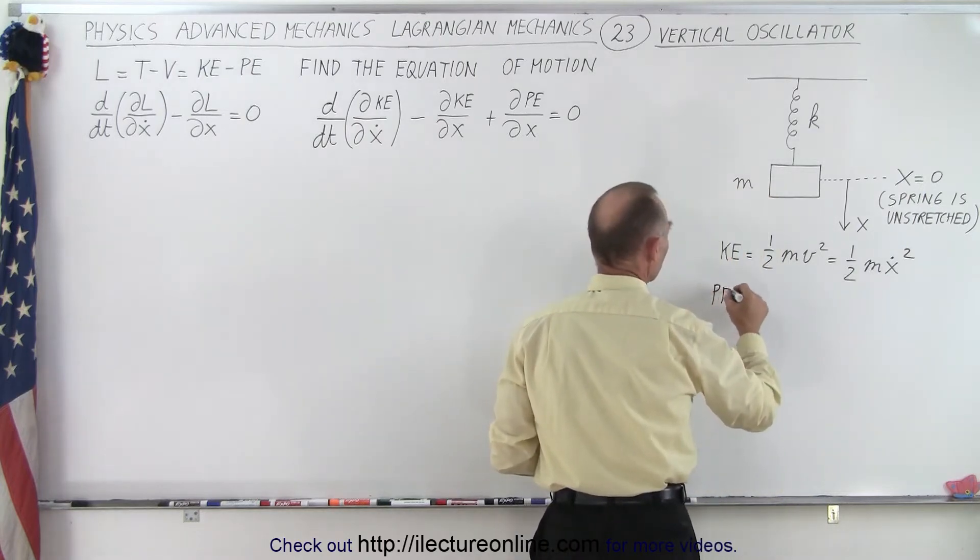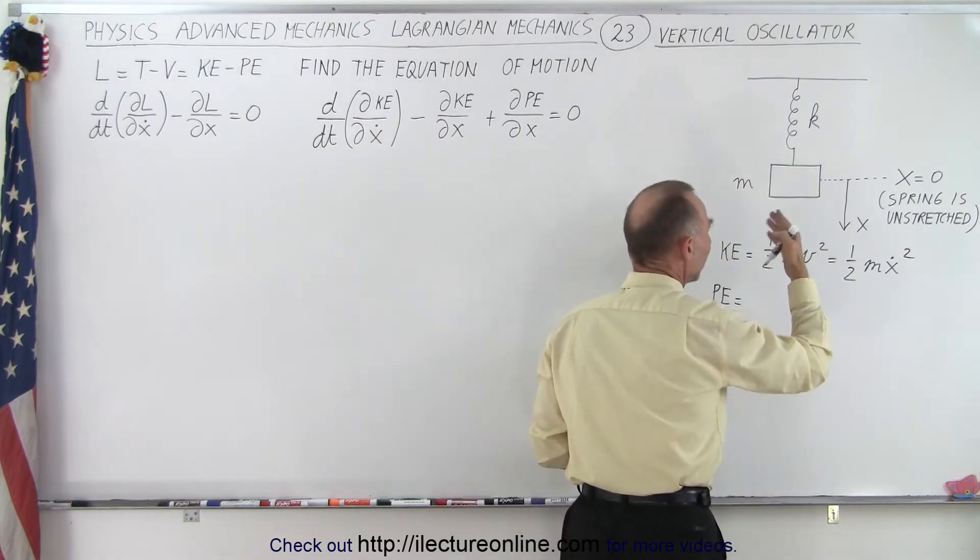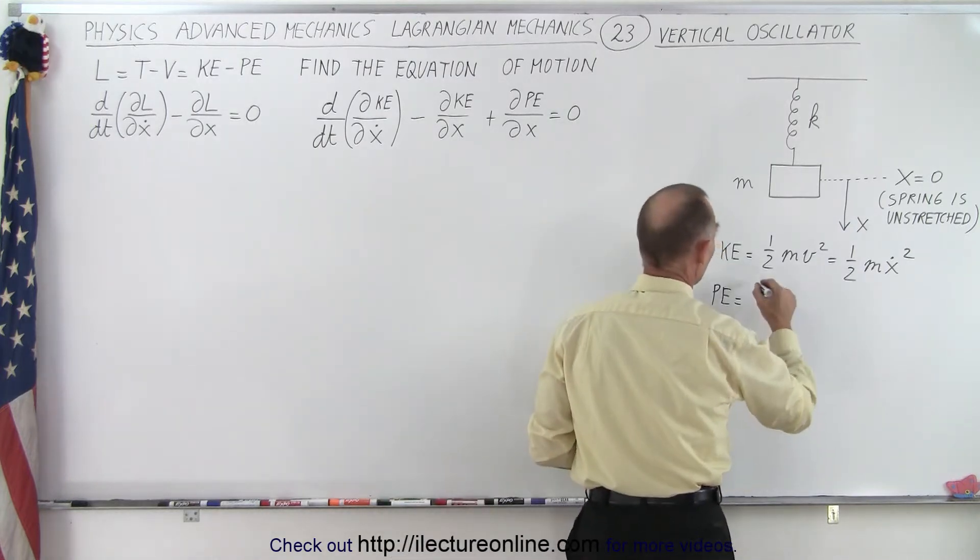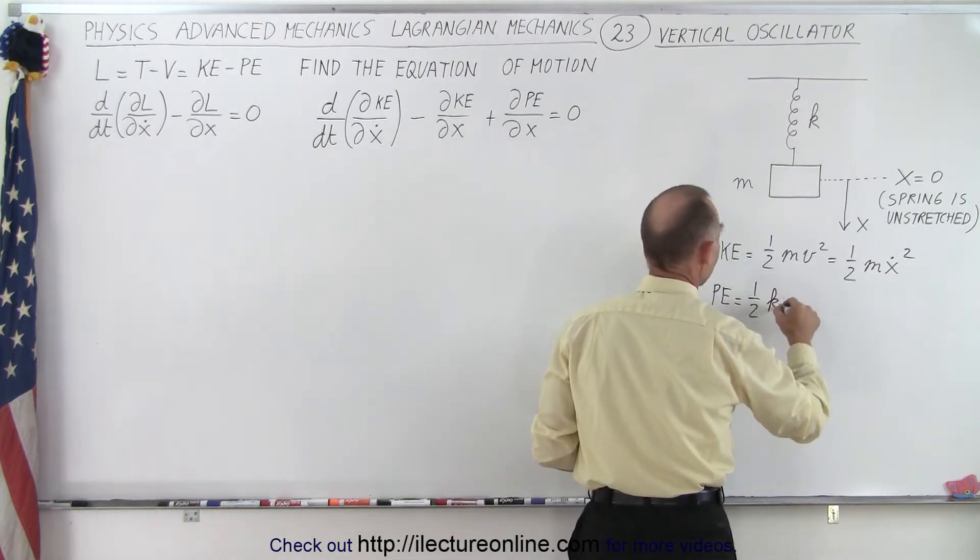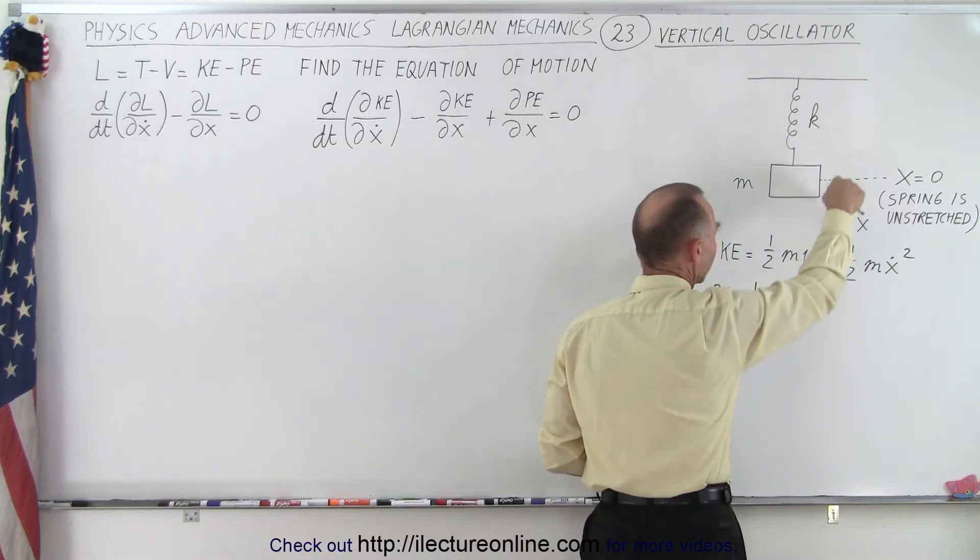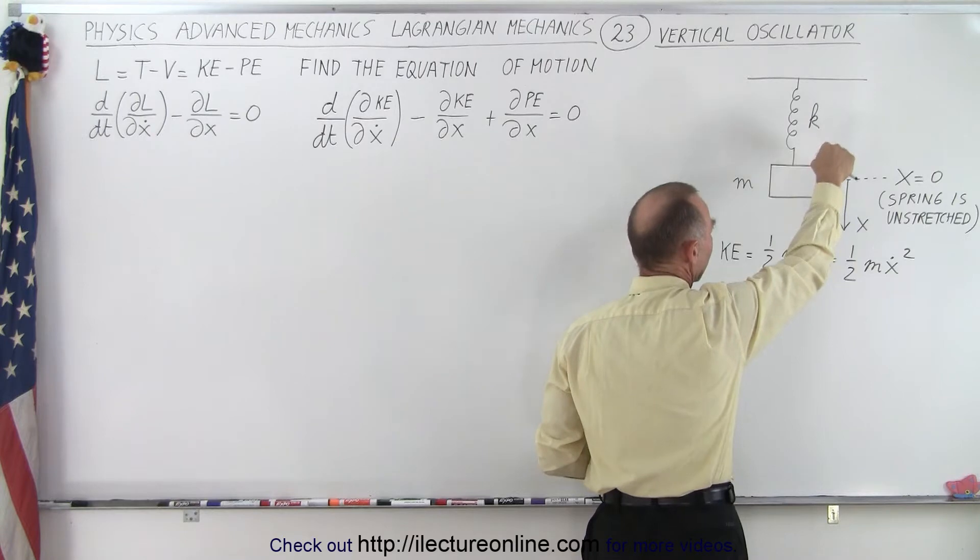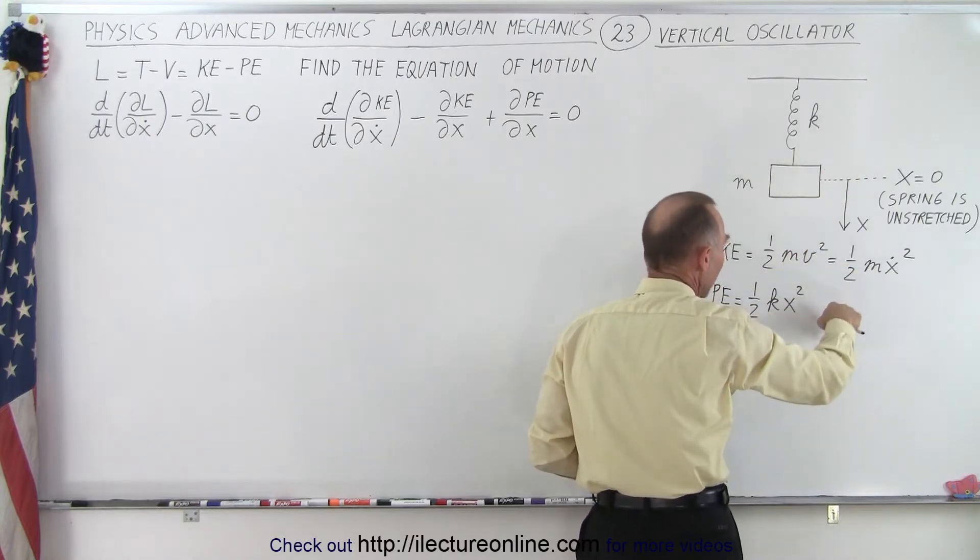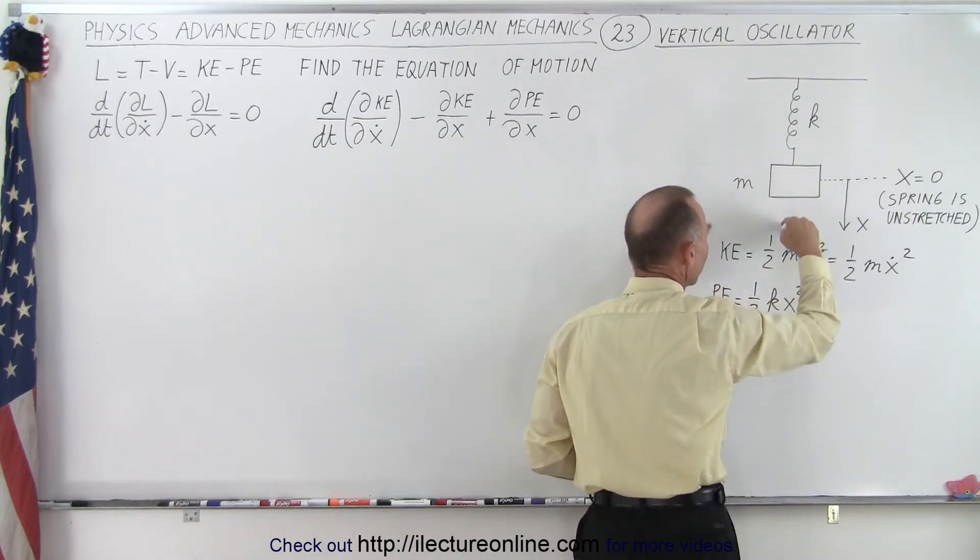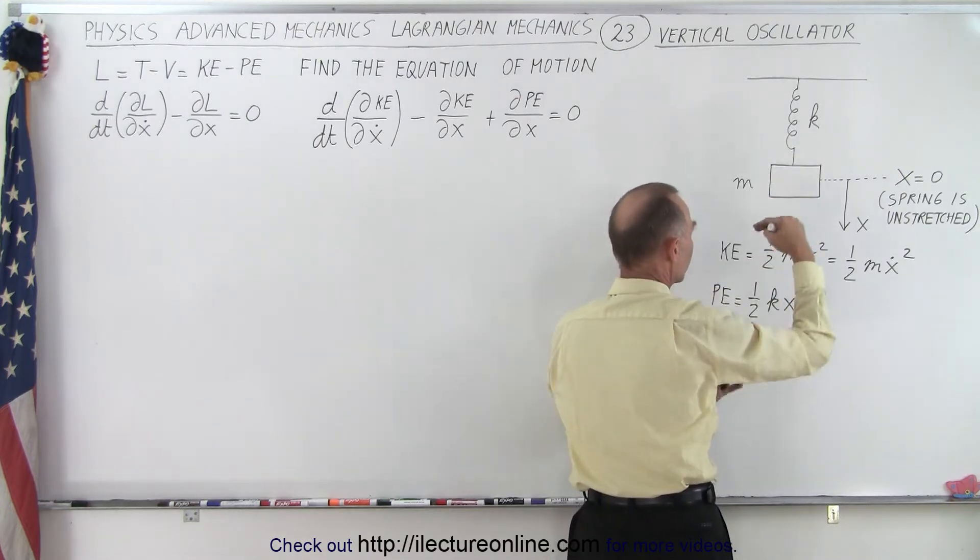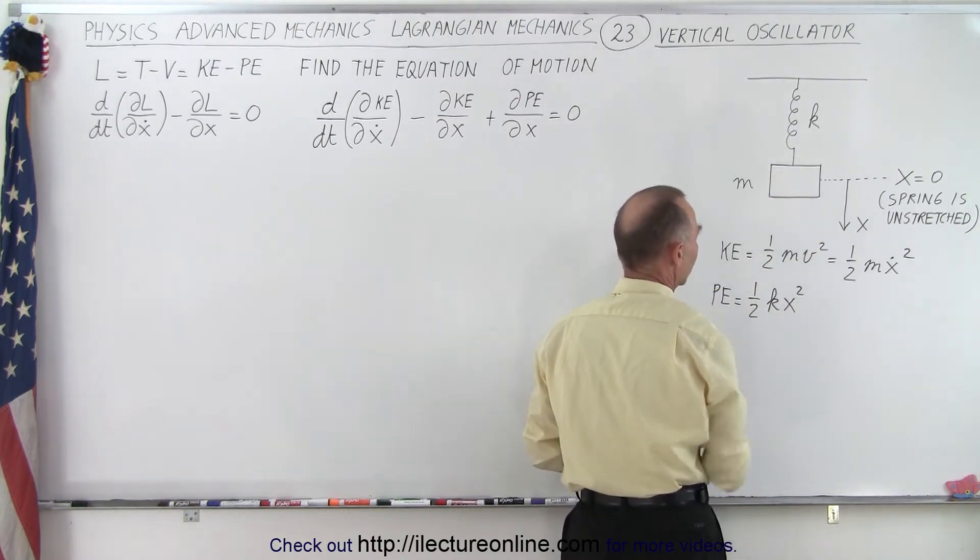The potential energy comes in two parts. The first one is the spring being stretched, which will be one half kx squared, where x is positive in the downward direction from this highest point in its motion. So the potential energy caused by the spring being stretched is one half kx squared.